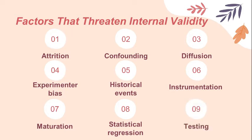The last threat to internal validity is testing. This refers to the effect of taking a test upon the scores of a second testing. Repeatedly testing participants using the same measures influences outcomes — if researchers give someone the same test three times, it is likely that they will do better as they learn the test or become used to the testing process and answer differently.